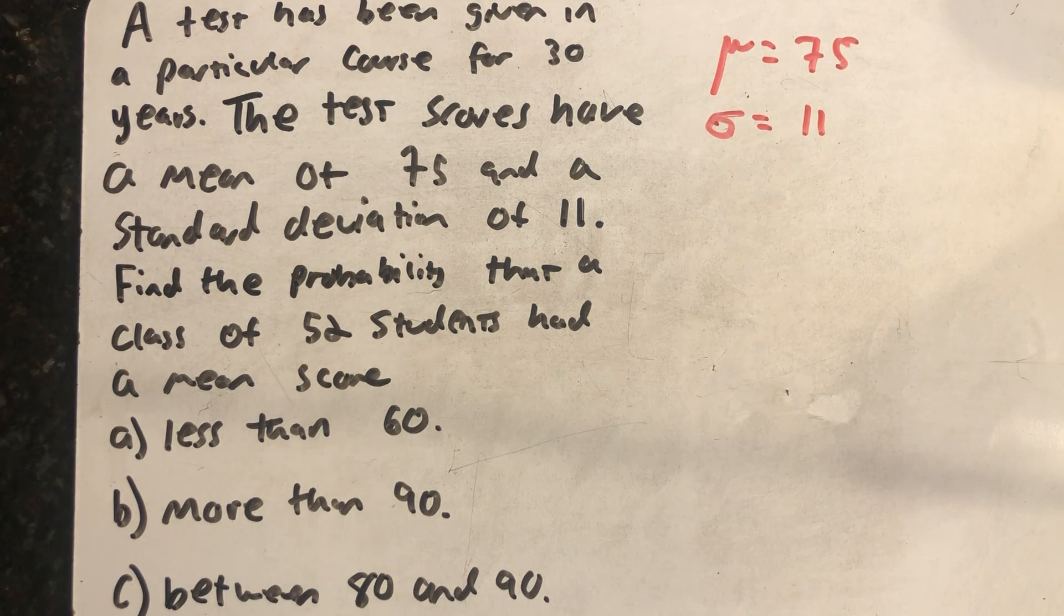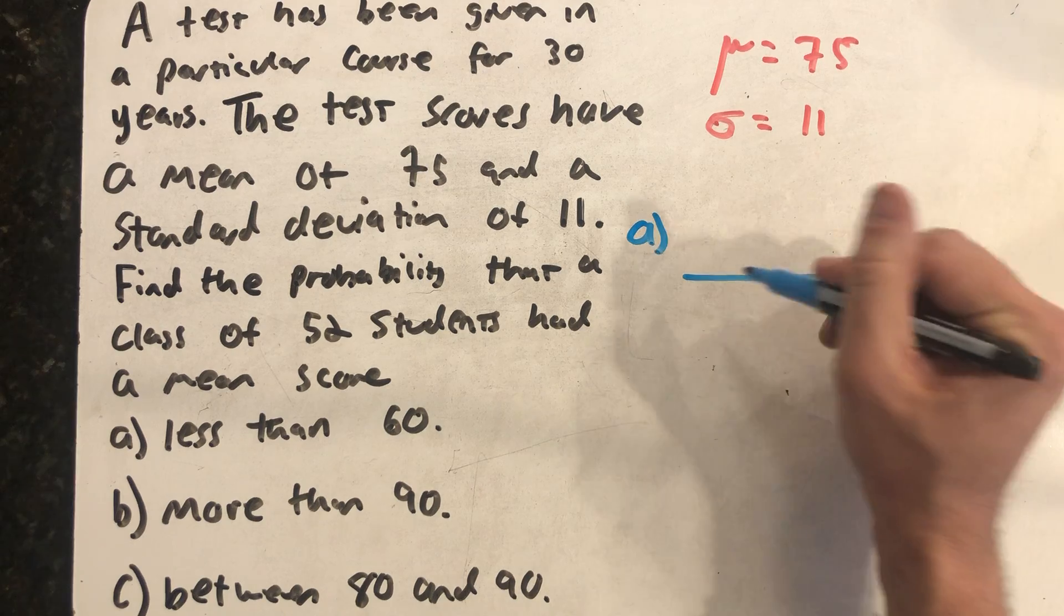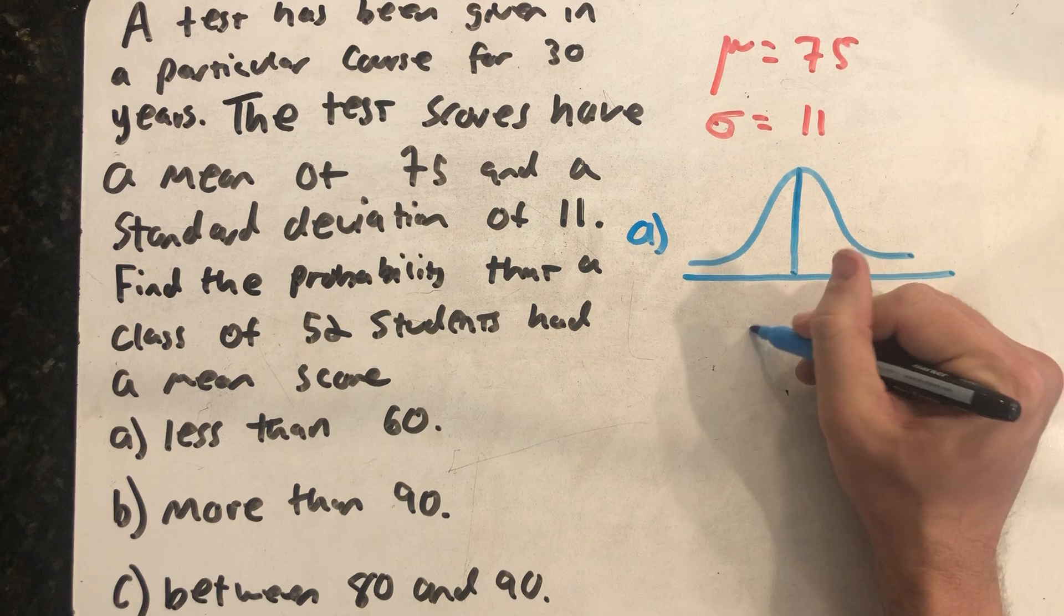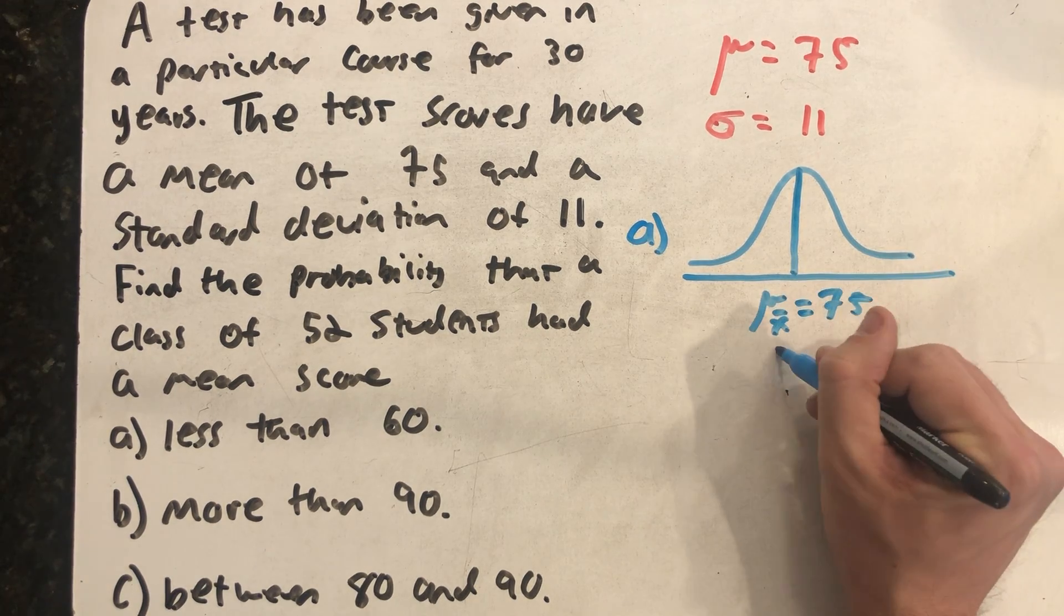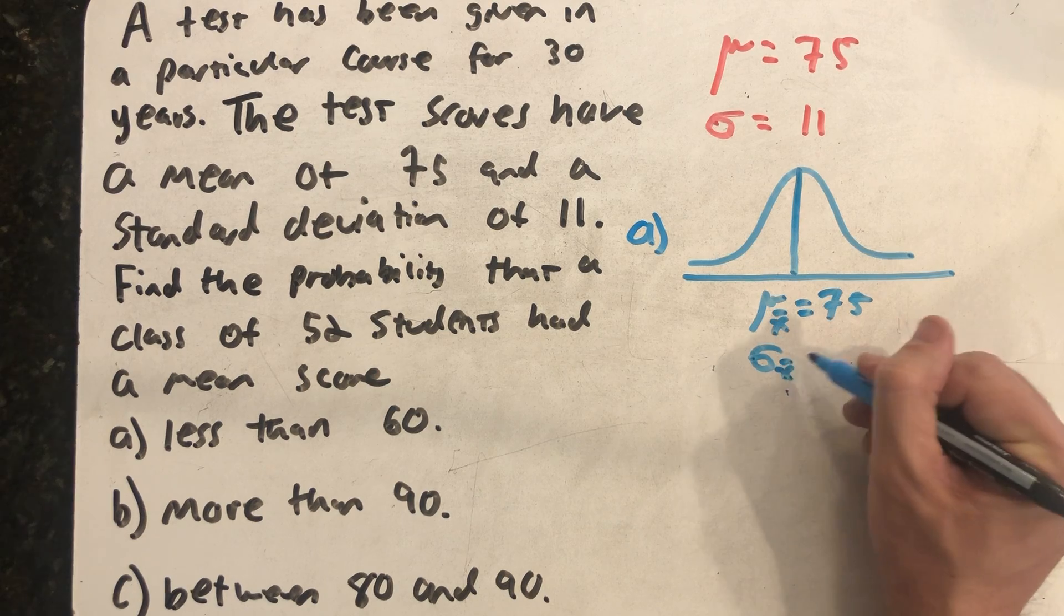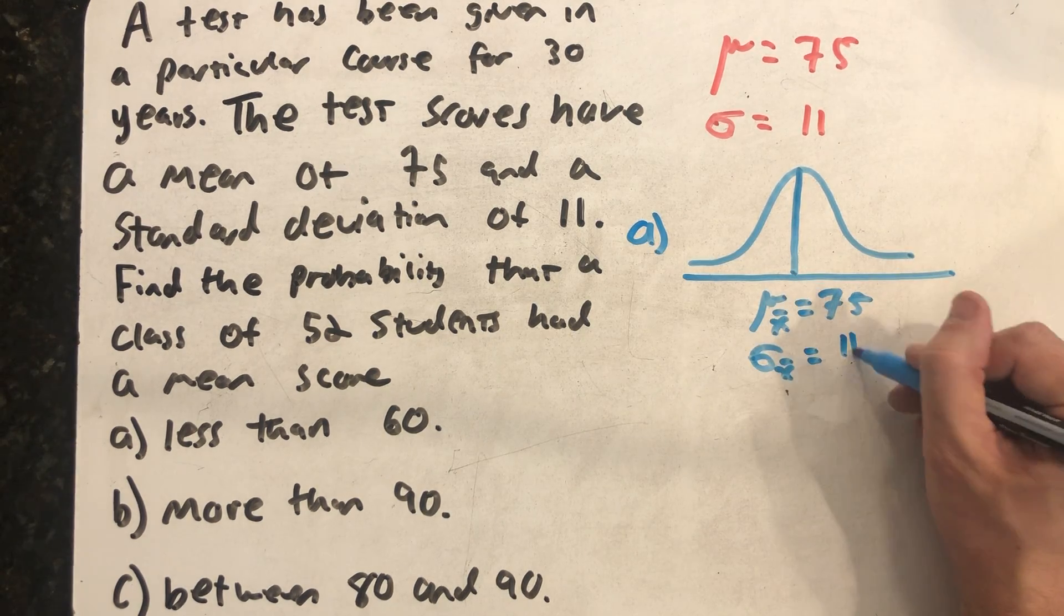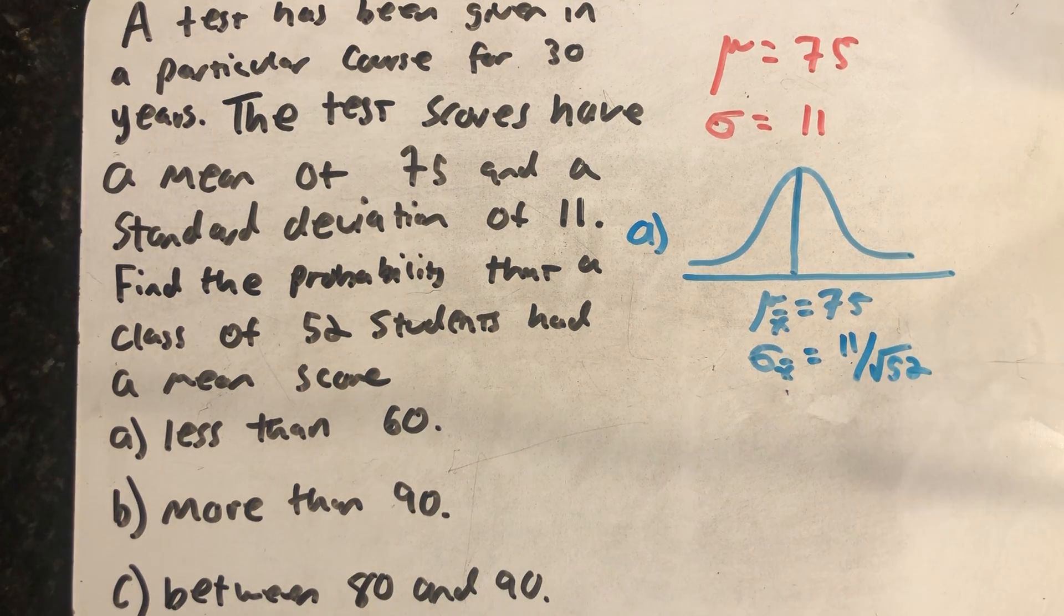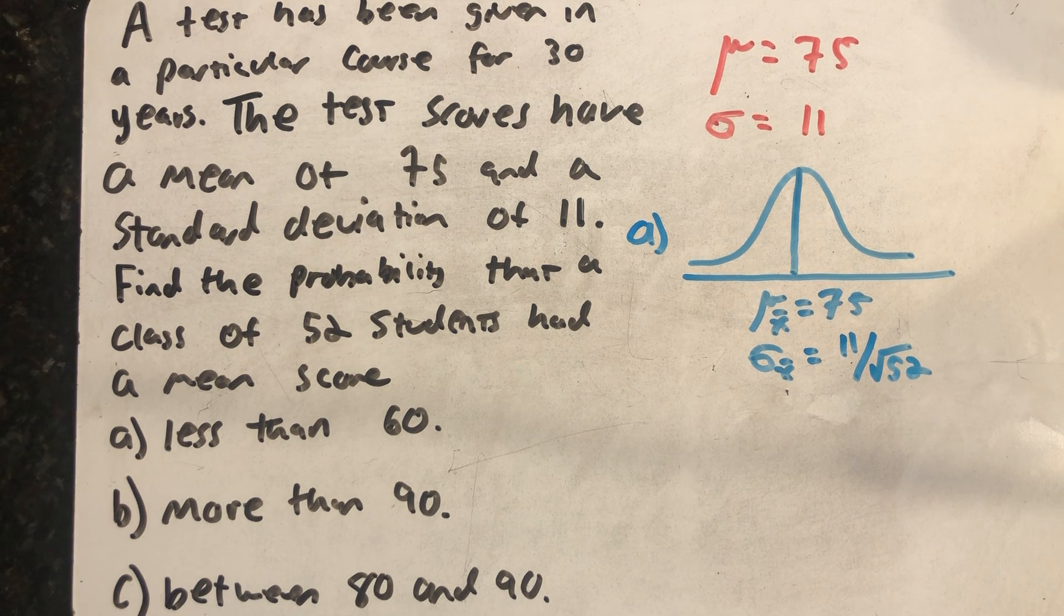Well, I'm hoping to use the central limit theorem, which would say the distribution of sample means is normally distributed, and the mean of all the sample means would be 75, and then the standard deviation of the distribution of sample means would be the old standard deviation divided by the square root of the sample size. But we need to make sure that we're actually allowed to use the central limit theorem here.